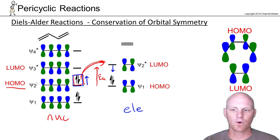is this conservation of orbital symmetry. If you notice, it's an interaction between the HOMO of the diene and the LUMO of the dienophile.